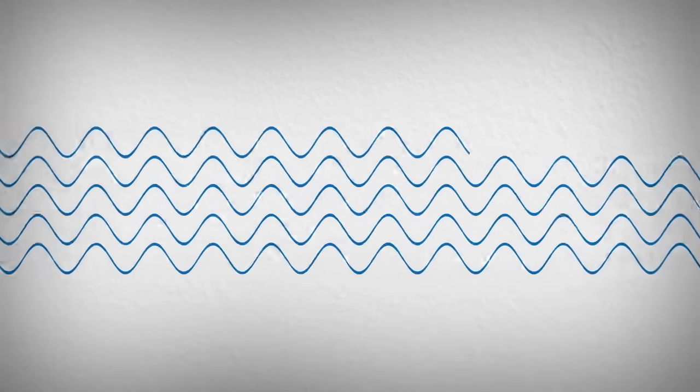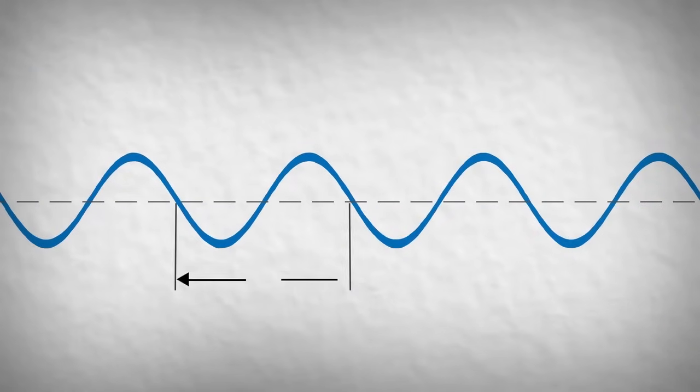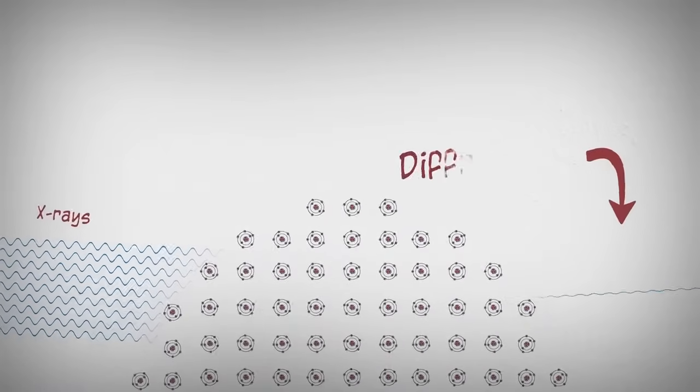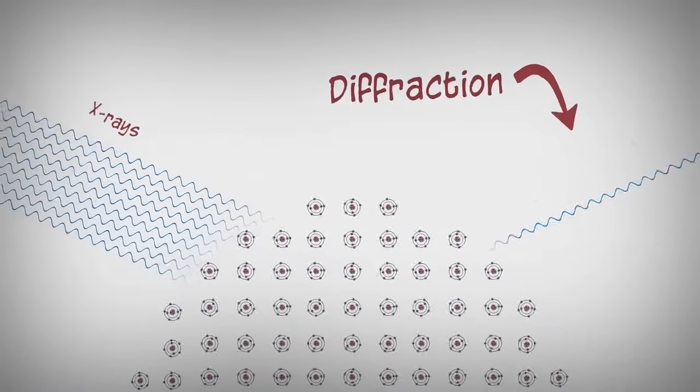X-rays are high-energy light with a repeating period called the wavelength. Since the wavelength of an X-ray is similar to the distance between atoms in a crystal, a special interference effect called diffraction can be used to measure the distance between the atoms.